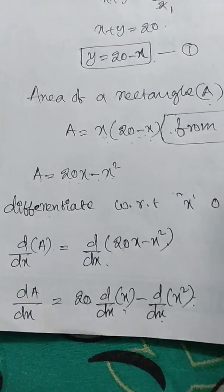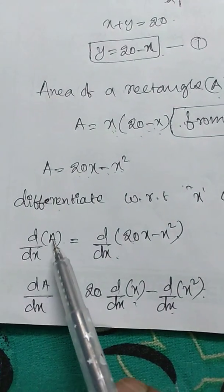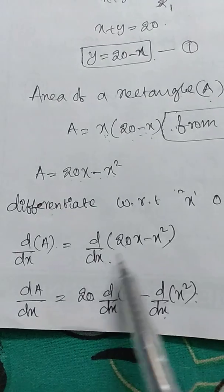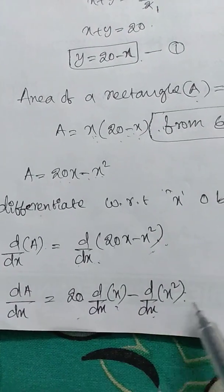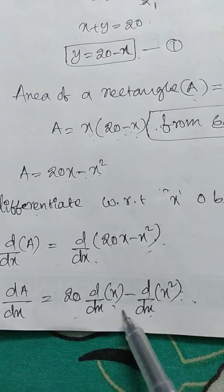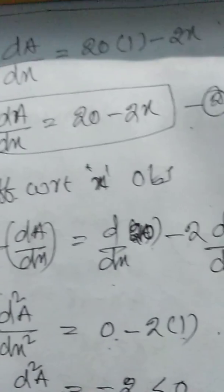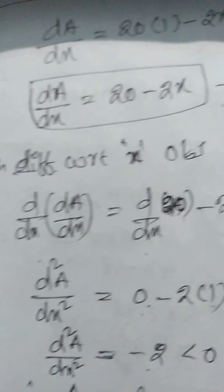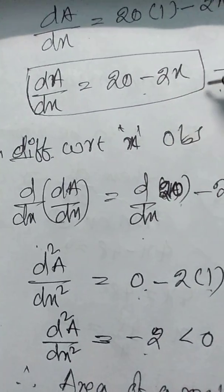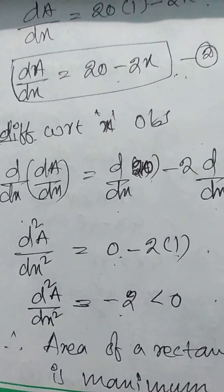Now differentiate the area with respect to x on both sides. The derivative of A = derivative of (20x - x²). Differentiation of a sum equals sum of differentiations: 20 · d/dx(x) - d/dx(x²) = 20(1) - 2x. Therefore dA/dx = 20 - 2x. Now we have to prove area is to be maximum.